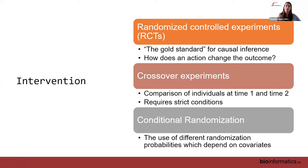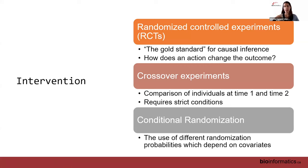Crossover experiments are theoretically very good but difficult to achieve. At time one we assign treatment one to all individuals, then at time two we assign the other treatment to the same individuals — which greatly reduces confounding. However, you have to meet strict conditions: primarily, whatever treatment is assigned at time one must not impact their outcome at time two, which can be difficult to fully determine.